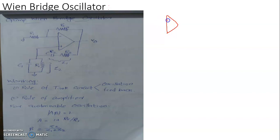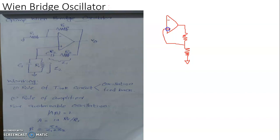Now let's move on to the case of the op-amp being used with positive feedback. To demonstrate positive feedback, a portion of the output energy is taken using a potential divider and injected into the non-inverting terminal. Two resistances R1 and R2 are connected to the output voltage point; the portion of output across R2 is injected to the non-inverting terminal.